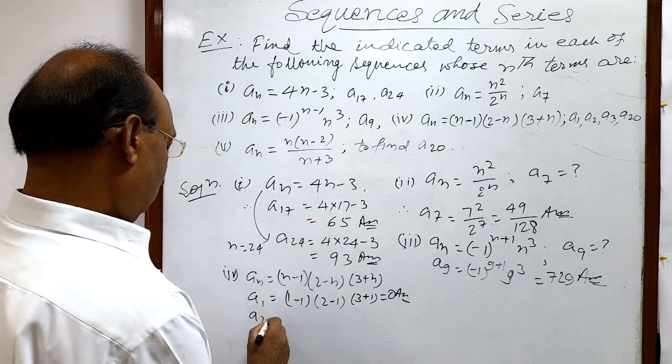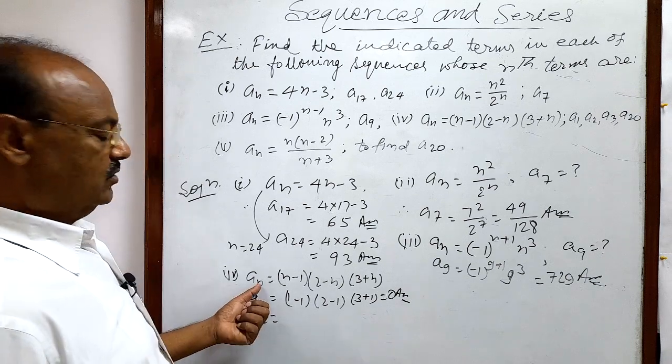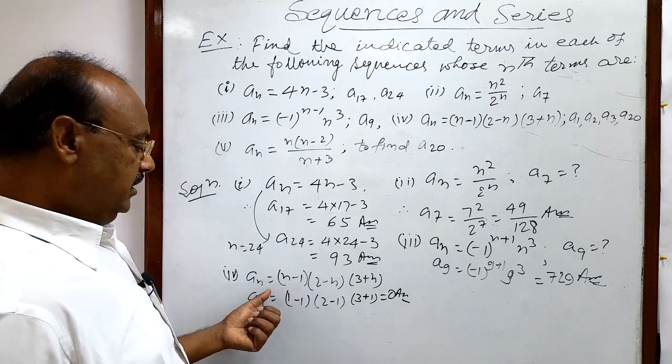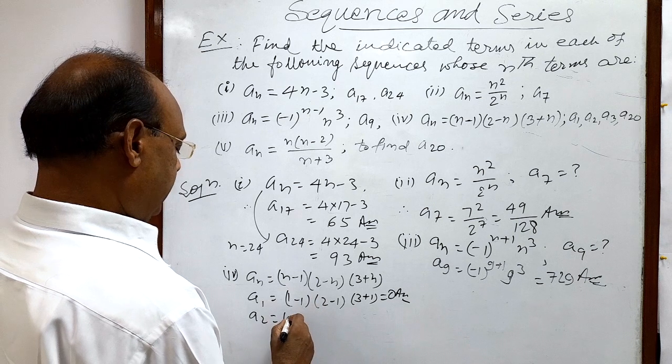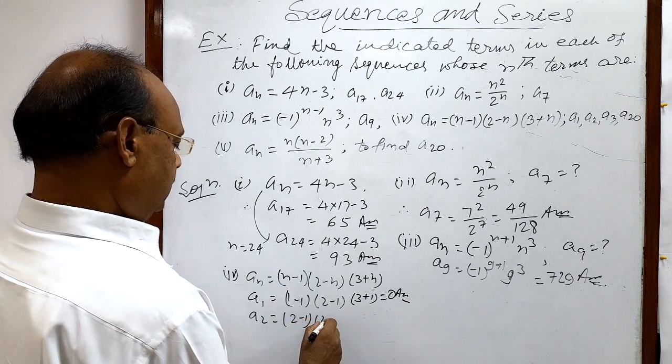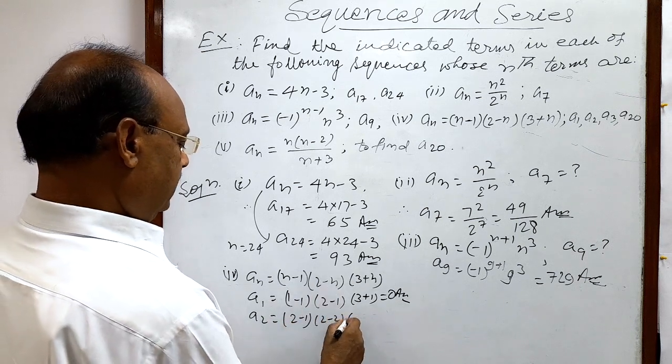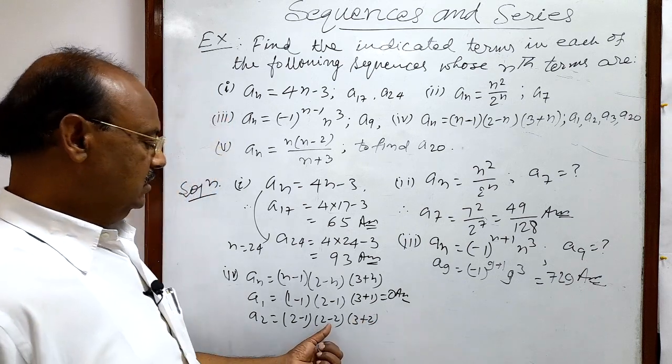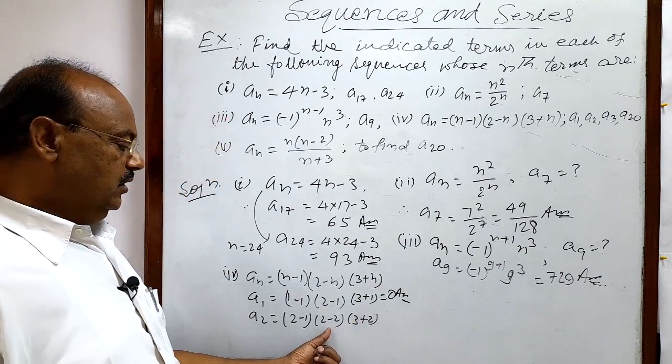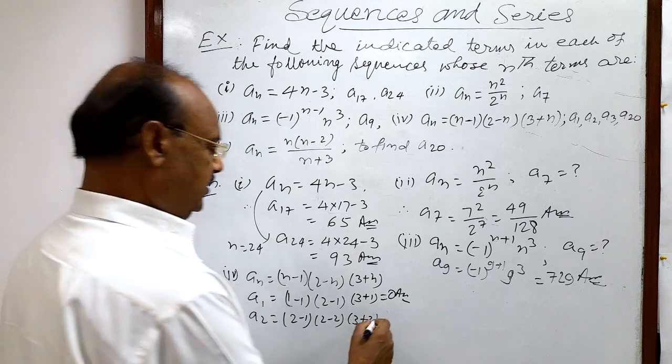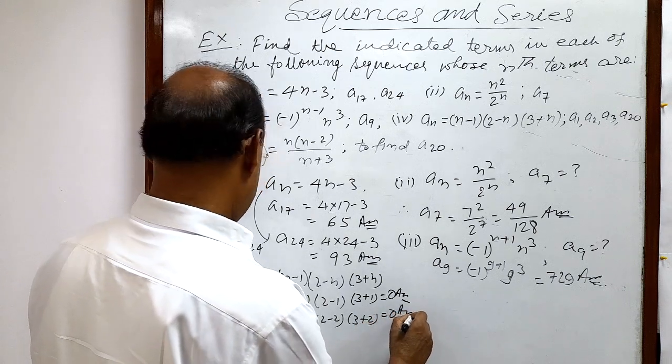Now we will get a2. How to get a2? In place of n we will be putting 2. So this is 2 minus 1, this is 2 minus 2, and this is 3 plus 2. In this case also you see this 2 minus 2 is 0. So multiplication of all these numbers is equal to 0. This is the answer.